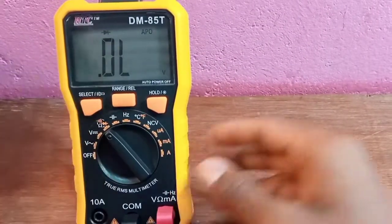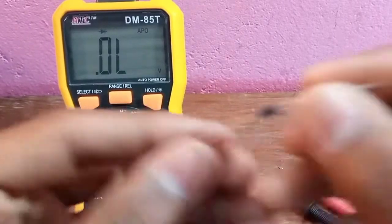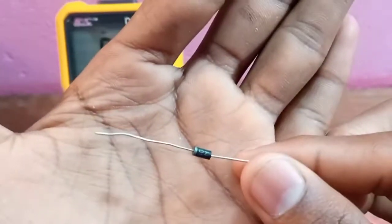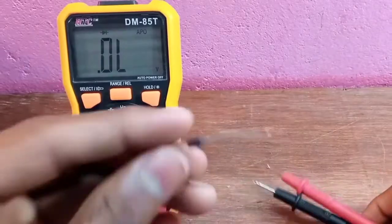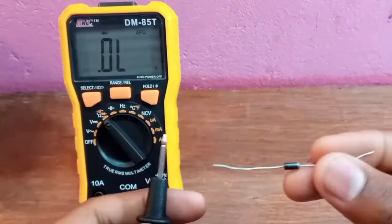Select the diode mode to identify if the diode is working or not. I'm using the 1N4007 rectifier diode.